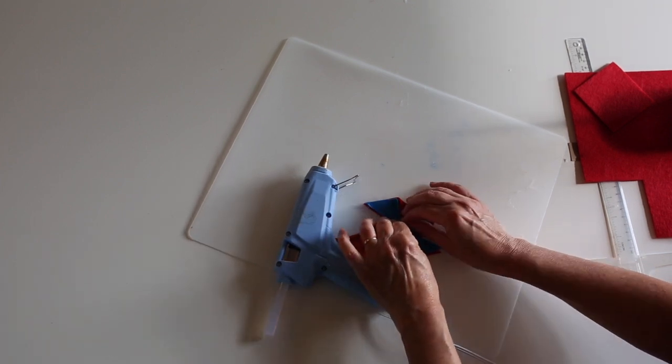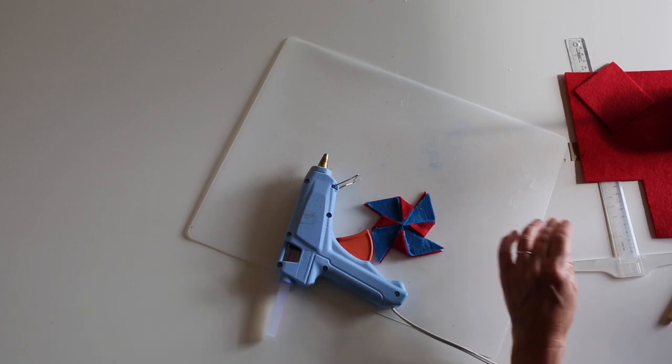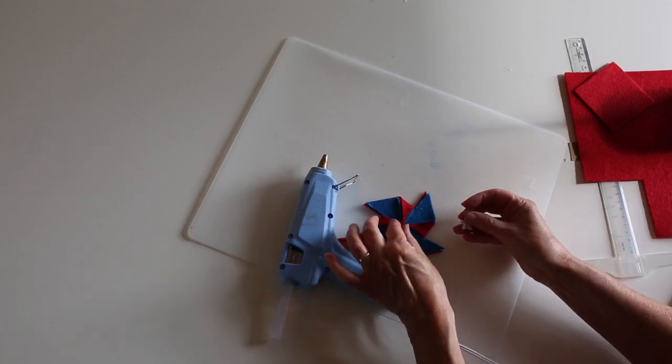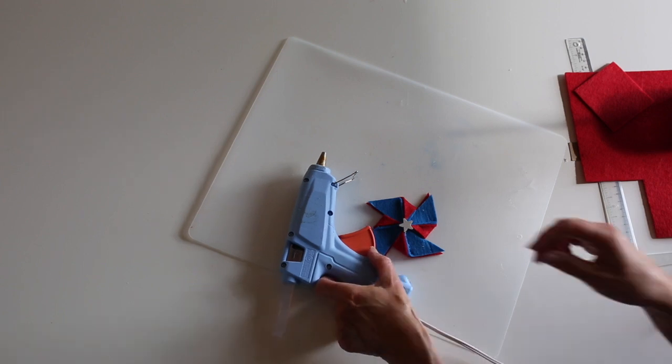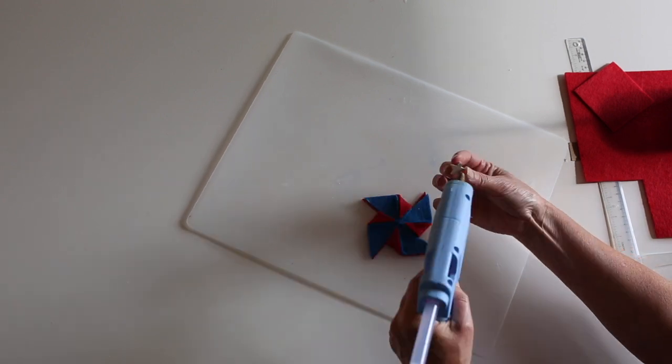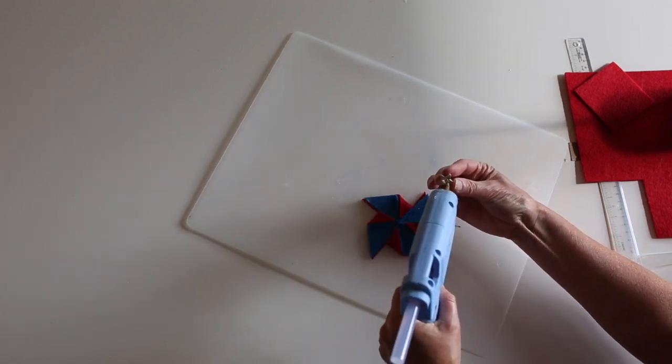Okay, now I'm going to take a star, let's see, which one do I want? Oh, maybe I'll do the white one on there. Okay, and then I'm just going to put glue on the back of the star.